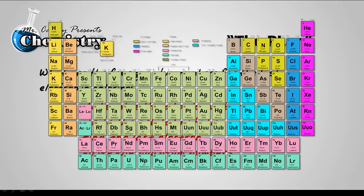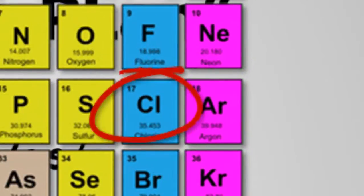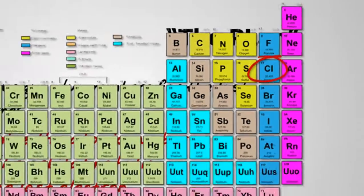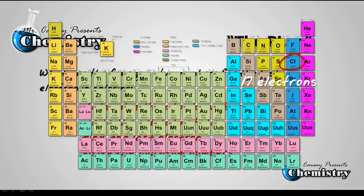All right, here's my periodic table. And chlorine is right there. And we can see by the atomic number that there are 17 electrons in chlorine.